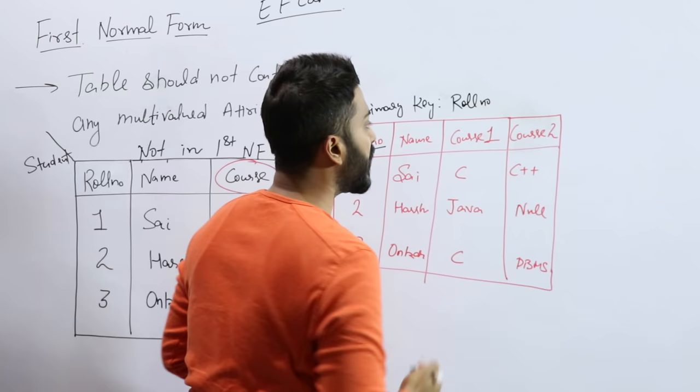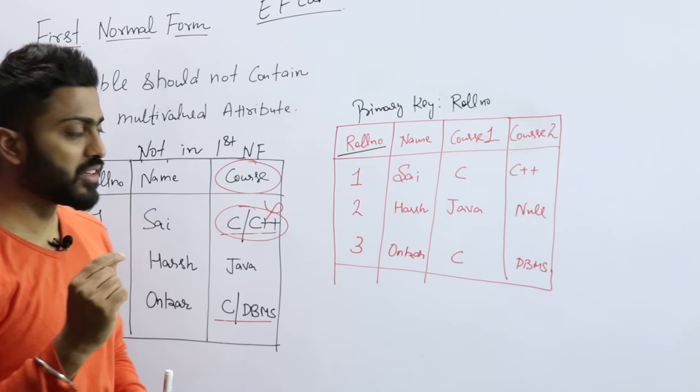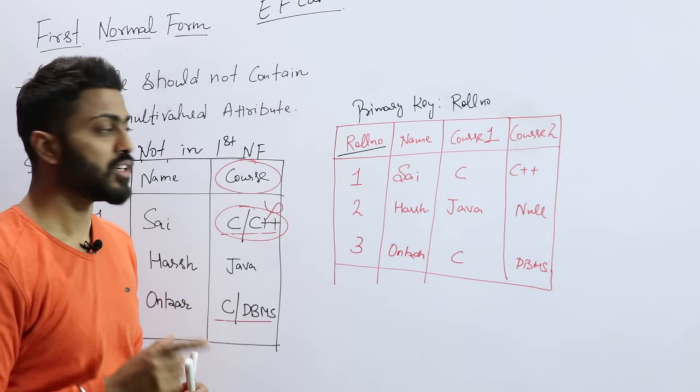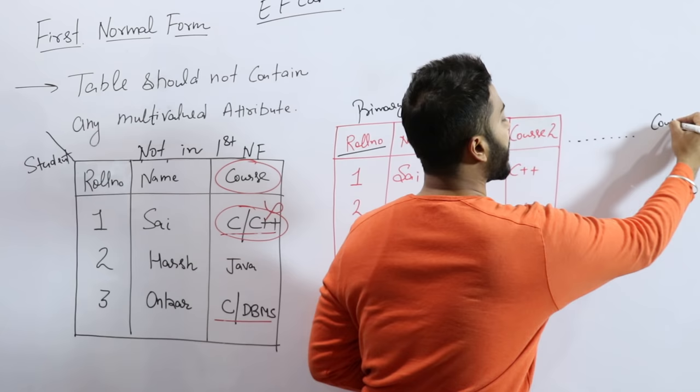But if we see, one problem that is happening here is that it is possible that a student is enrolled in n number of courses and another student is enrolled in only one course. So what will happen? For one student, you are writing columns again and again, n number of columns, and there will be some values.